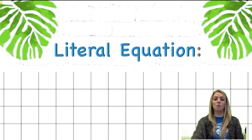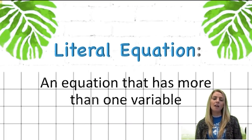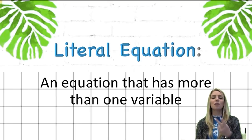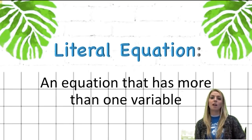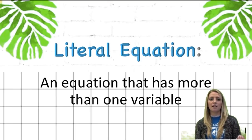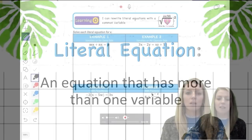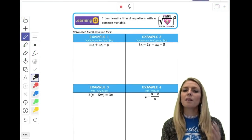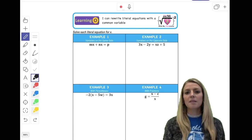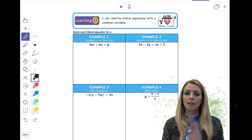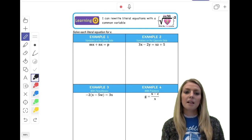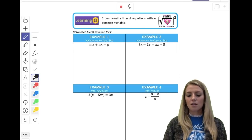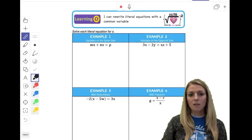For example, X and Y, or A and B. But today we're going to talk about literal equations that have two of the same variable in it, and we're going to have to factor it out. So let's see if you're up for the challenge. I'm going to go over four examples with you today: the first one where the common variable's on the same side, example two they're on the opposite side, example three has parentheses, and example four is dealing with fractions. So let's get started with example one.